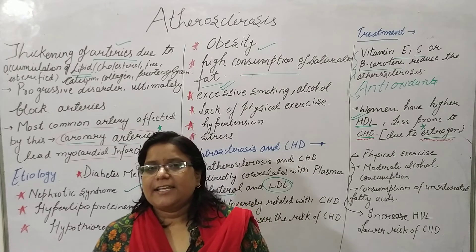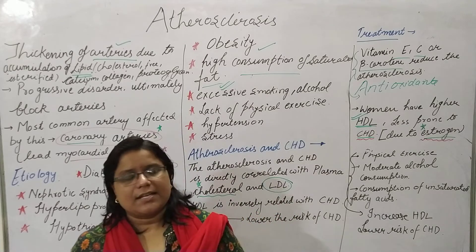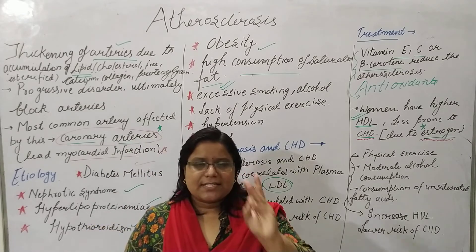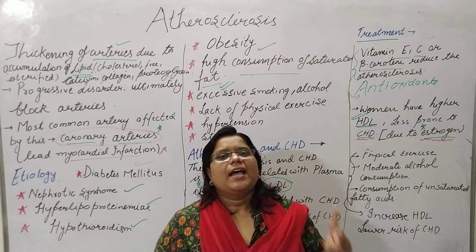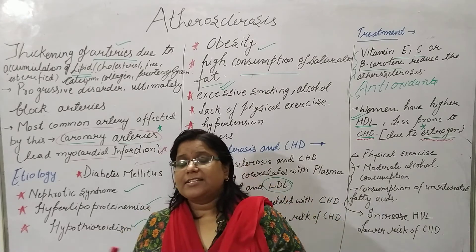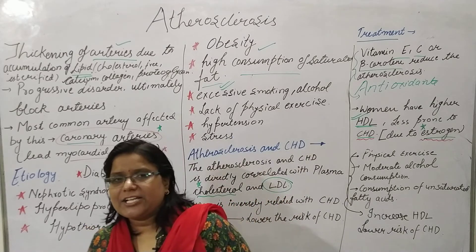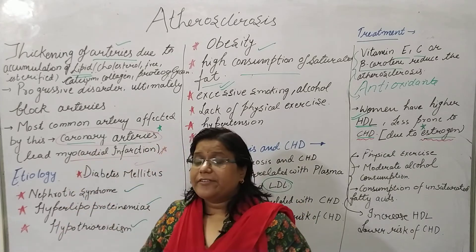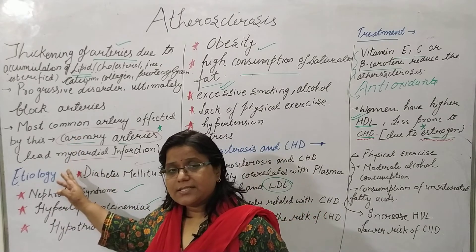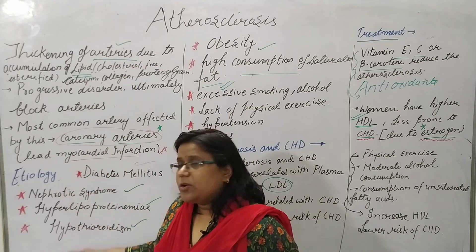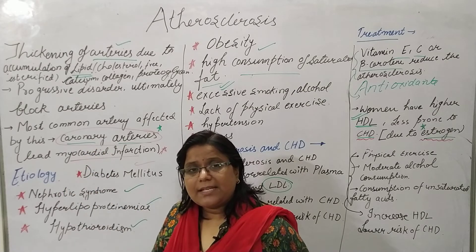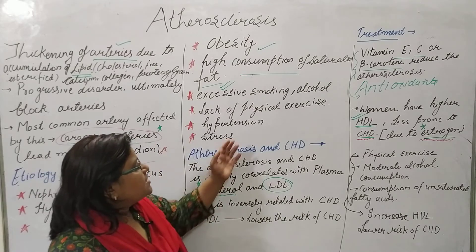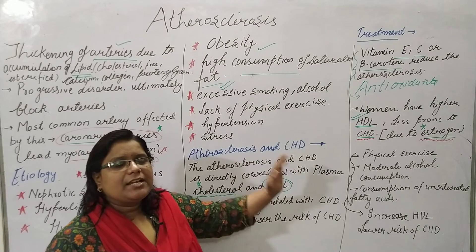Such factors that increase HDL decrease the risk of CHD and atherosclerosis. To summarize this lecture: we discussed the definition — thickening of the arteries — caused by deposition of calcium, lipid, collagen, and proteoglycans. The coronary artery is the most prominently affected. Etiological factors include hypothyroidism, diabetes mellitus, obesity, lack of physical exercise, alcohol consumption, stress, and hypertension.